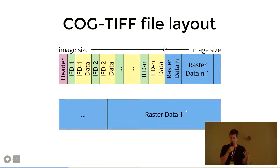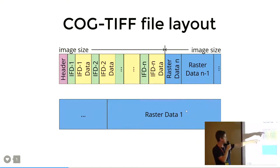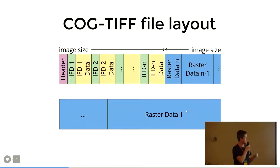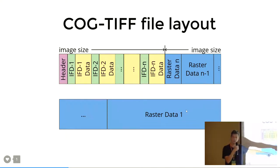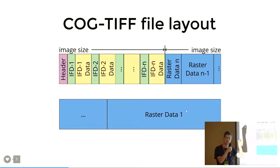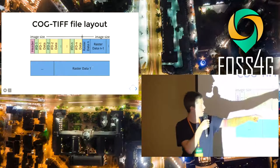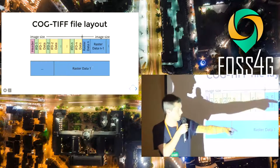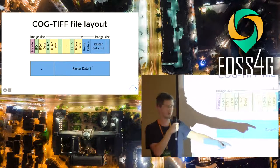An even more well-behaved TIFF file, which is a COG, looks like this. Again, you have the header, the pointer to the first IFD, then the first IFD data. The first image is the full resolution — the largest image — but the actual raster data for that lies at the end of the file. Then you have the next IFD with the next largest resolution and so on. The image size decreases going through the IFDs, then it increases again — you have the raster data for the lowest resolution first, then the next lowest, until you get to the highest resolution at the end of the file.